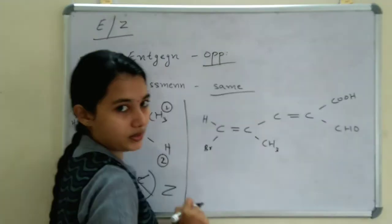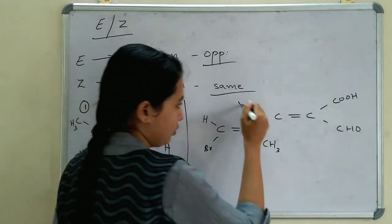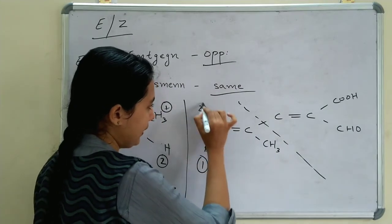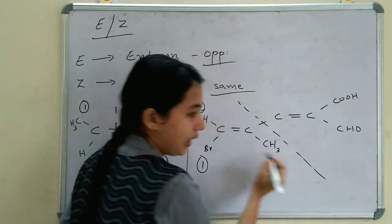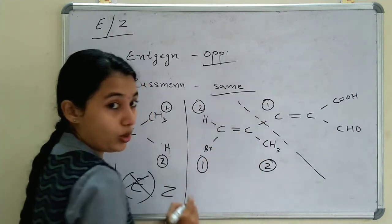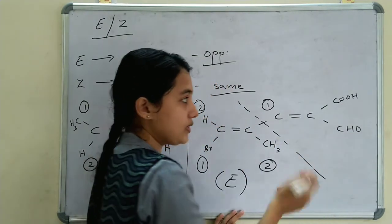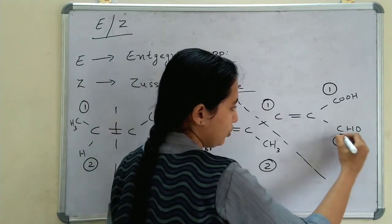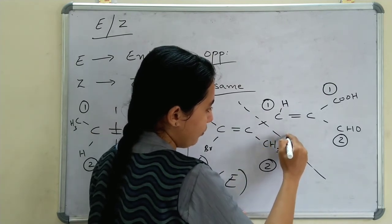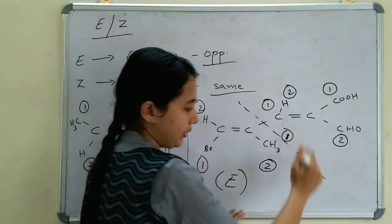Another example with two double bond carbons: on the first carbon, bromine gets 1 and hydrogen gets 2. On the second carbon, the larger substituent (C=C group) gets 1 and CH₃ gets 2. The higher priority groups (1 and 1) are on opposite sides, so this is E configuration.